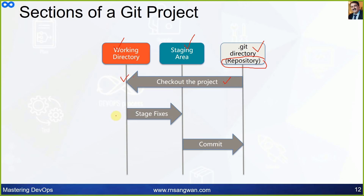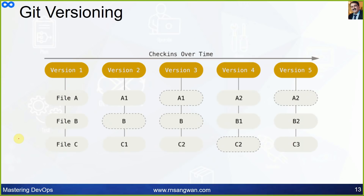This is the workflow of Git. Your working directory is where you work. The .git directory is your repository. The staging area is in between. You check out the project into your working directory, make changes, then stage the fixes to the staging area. Once satisfied, you commit — sending the data to the local repository.